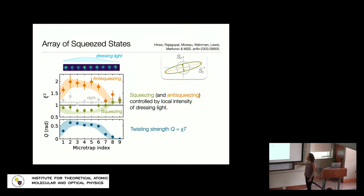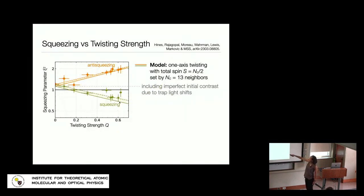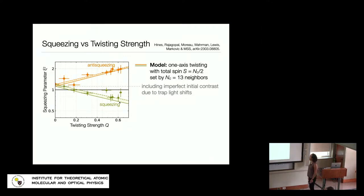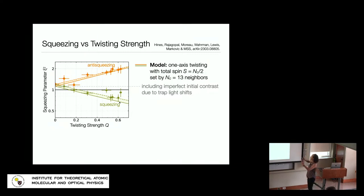Plotting squeezing directly versus twisting strength shows that as we increase the interaction strength primarily via laser intensity, the squeezing is improving in a way that matches well to a model of one-axis twisting, with the effective collective spin size set by the number of interacting neighbors — 13 in our case — accounting for imperfect initial contrast. We didn't go further because going to longer sequence times introduces contrast loss from trap light-shift inhomogeneities not perfectly canceled by atomic motion. We fixed our sequence time, and the other option is higher laser intensity — probably what we should do next.